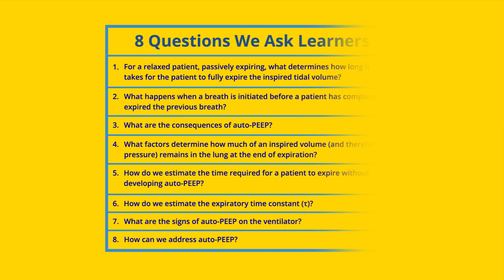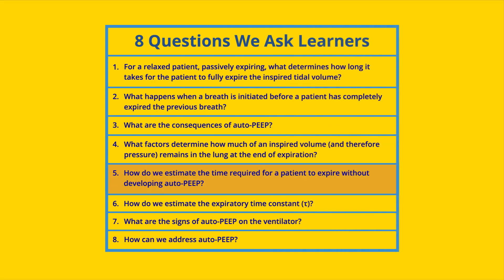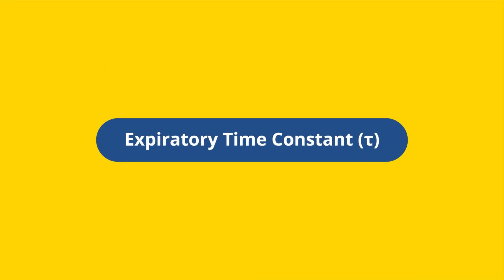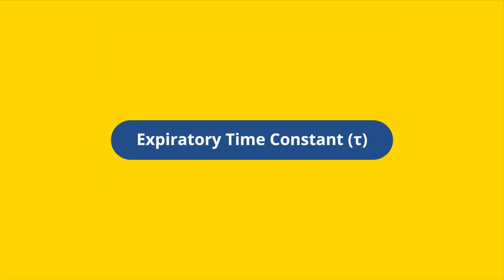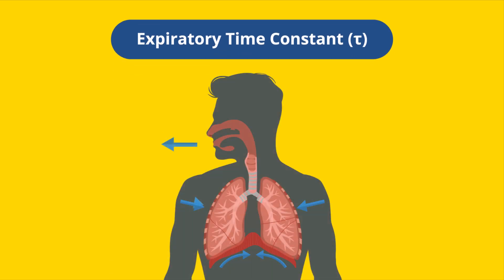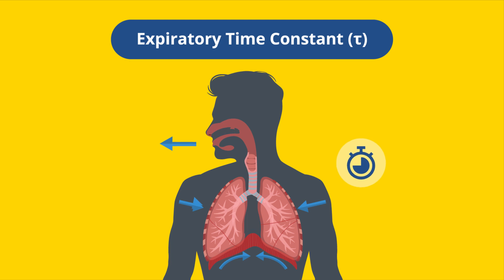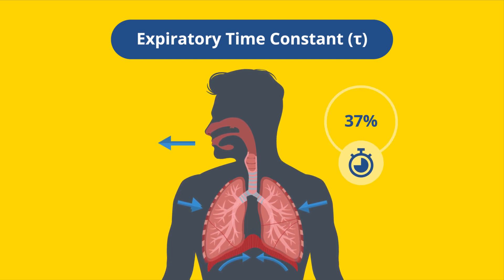For instance, to explain how we estimate the time required for a patient without developing AutoPEEP, the authors recommend familiarizing learners with the concept of expiratory time constant, or tau. The expiratory time constant represents the time that the lung requires to exhale until only about 37% of the initial volume of air remains in the lungs.